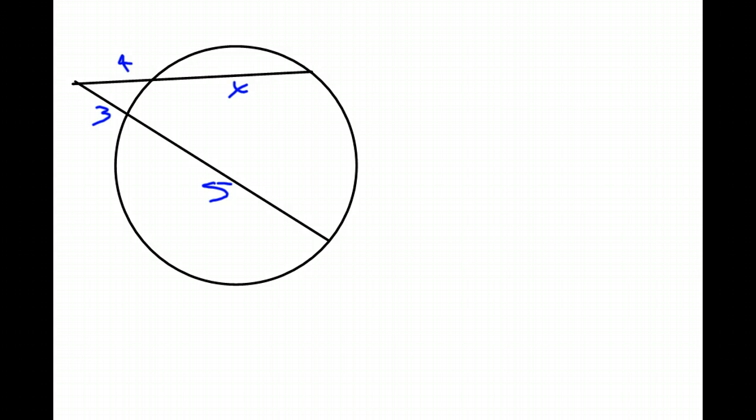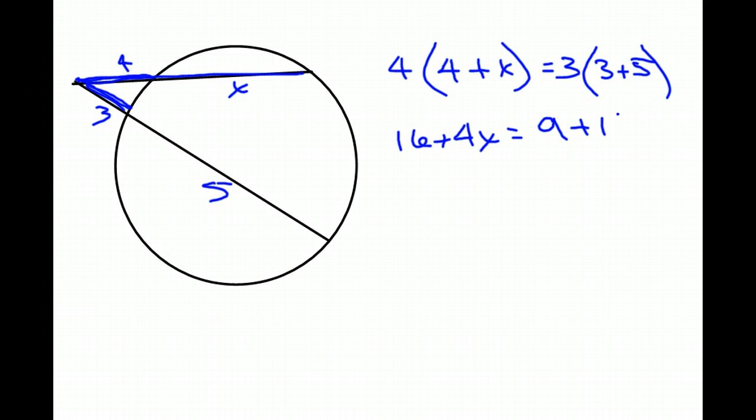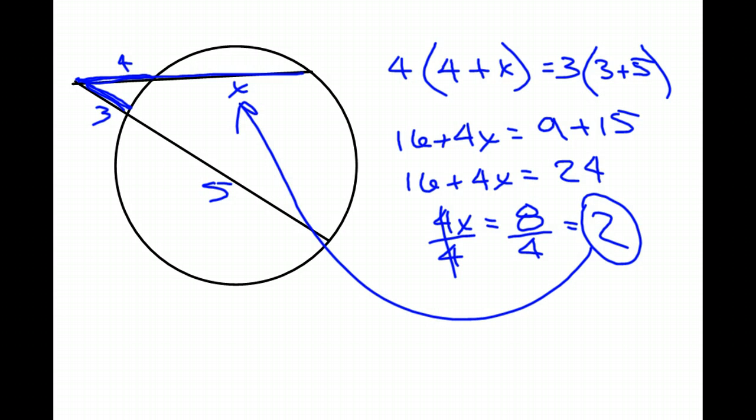So according to what I said before, we're going to take the length of the outside part of the segment right here, 4, we're going to multiply it times the entire thing. The entire thing is the length 4 plus whatever x is. That will give us the length of the whole thing. Equals the length here is 3 times the sum of the whole line, 3 plus 5. So we've got, using distributive, 16 plus 4x equals 9 plus 15. So 16 plus 4x equals 24. Subtract 16 from both sides, we get 8, divide by 4, and we get 2 for that length right there.